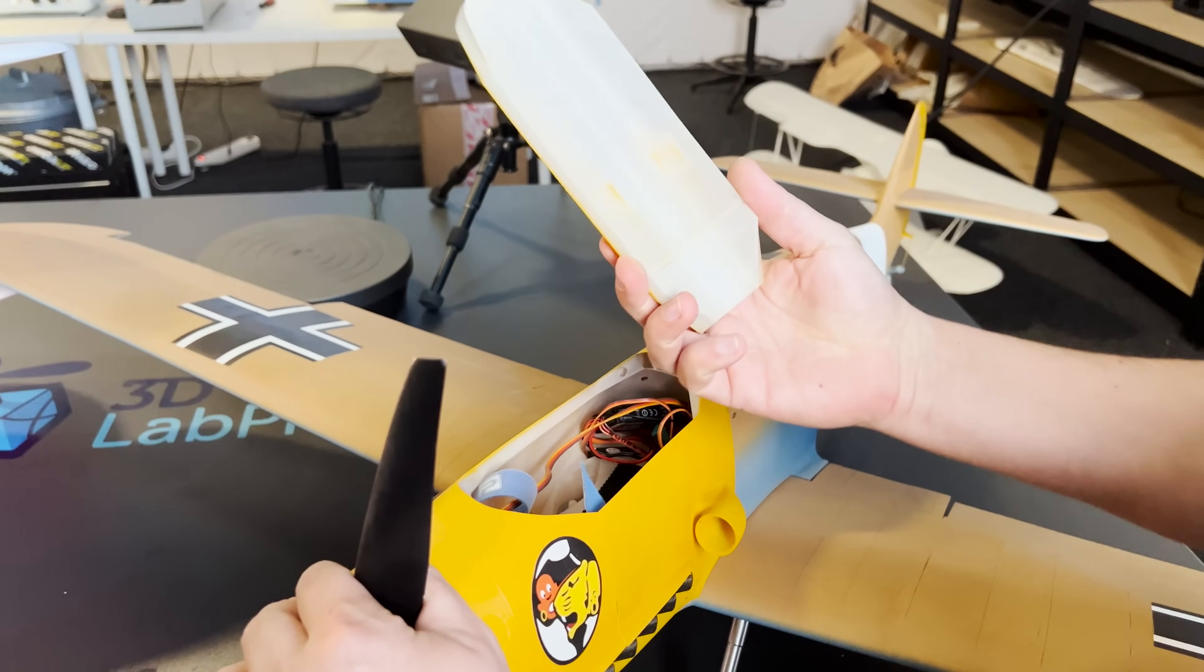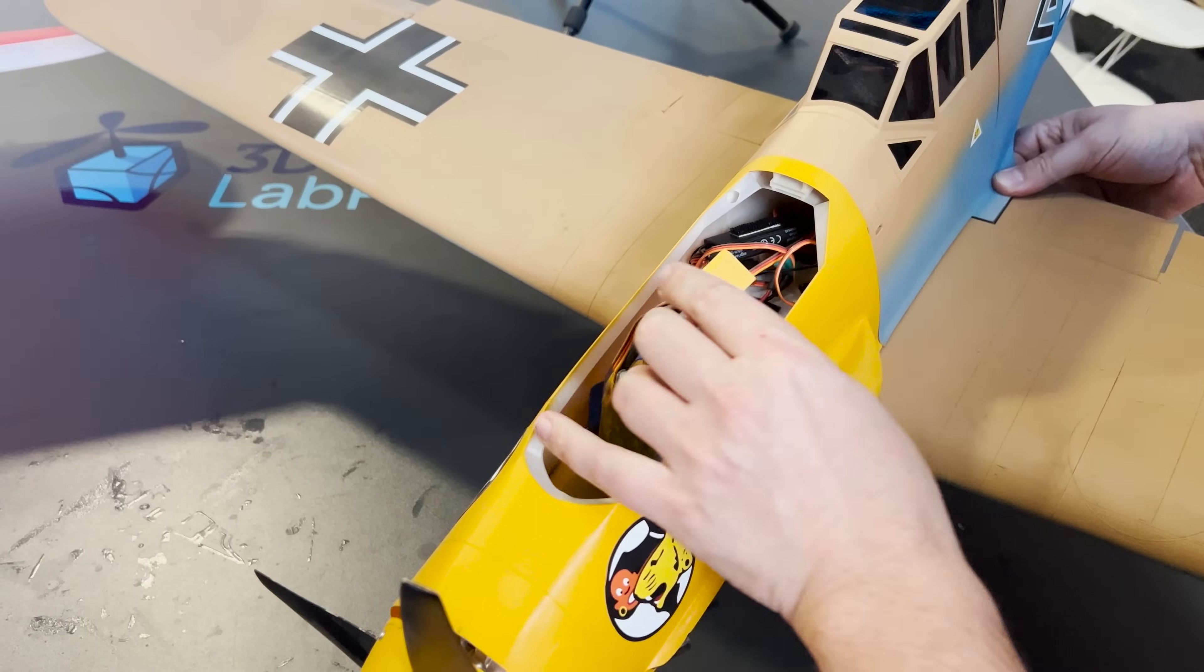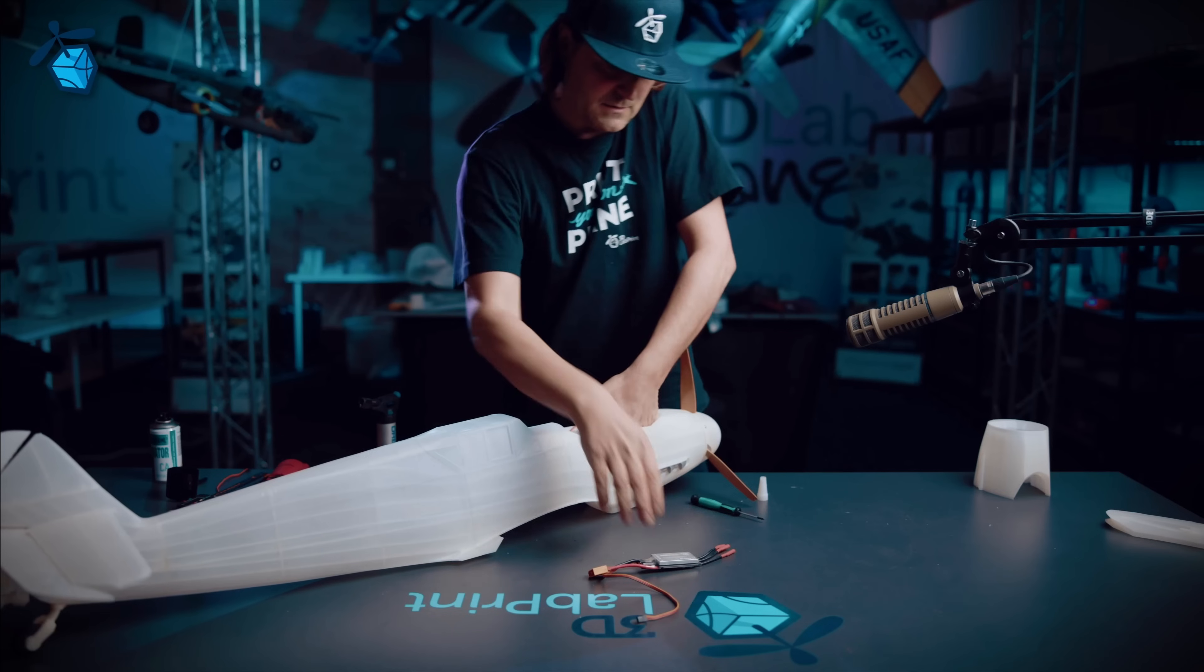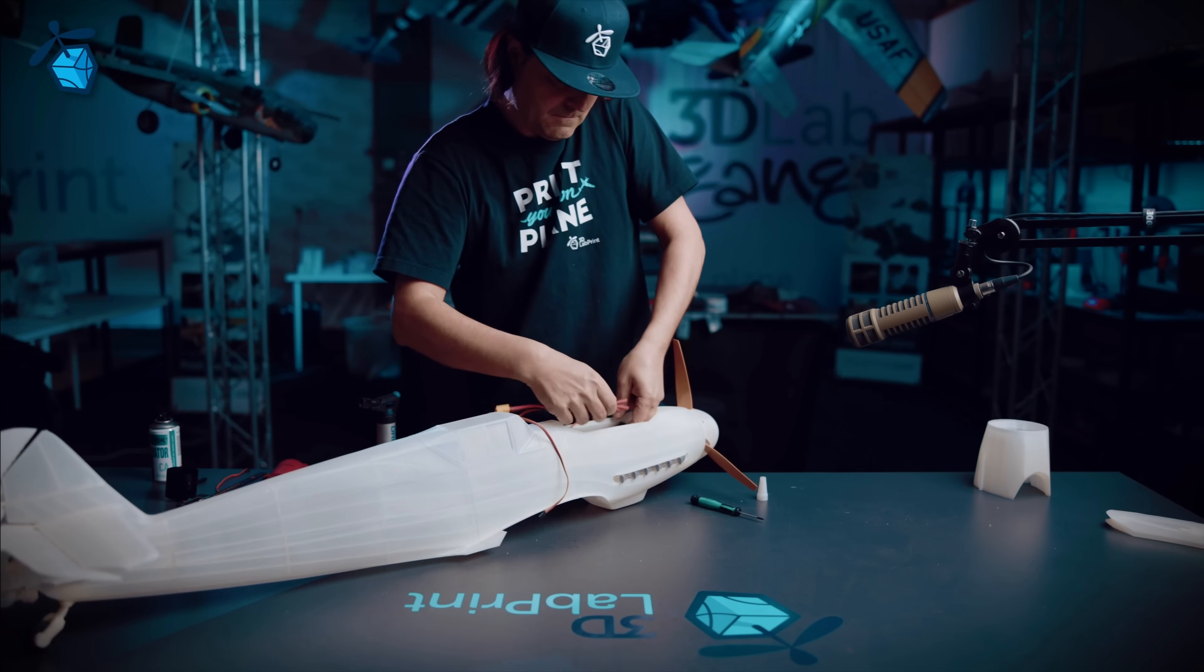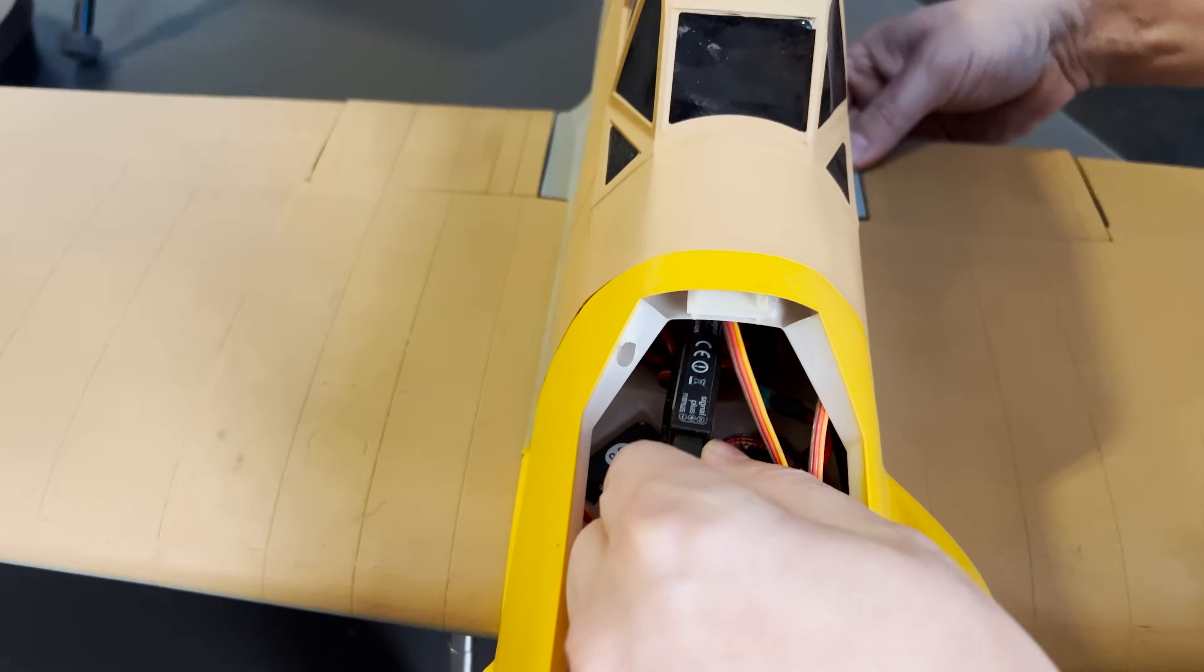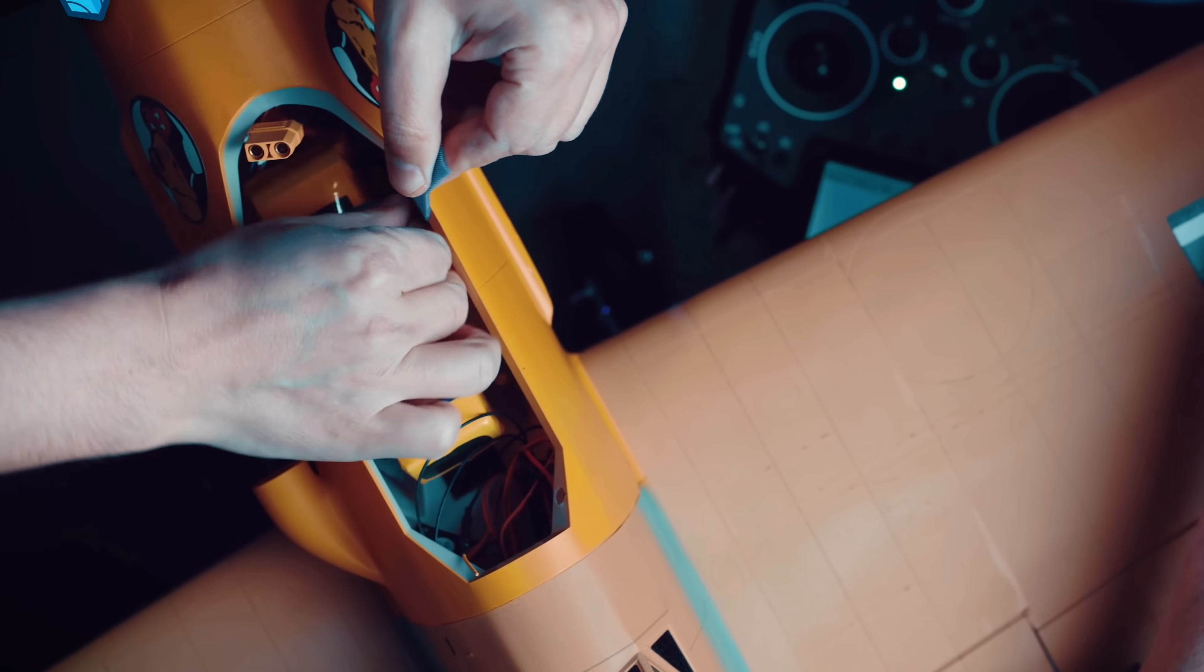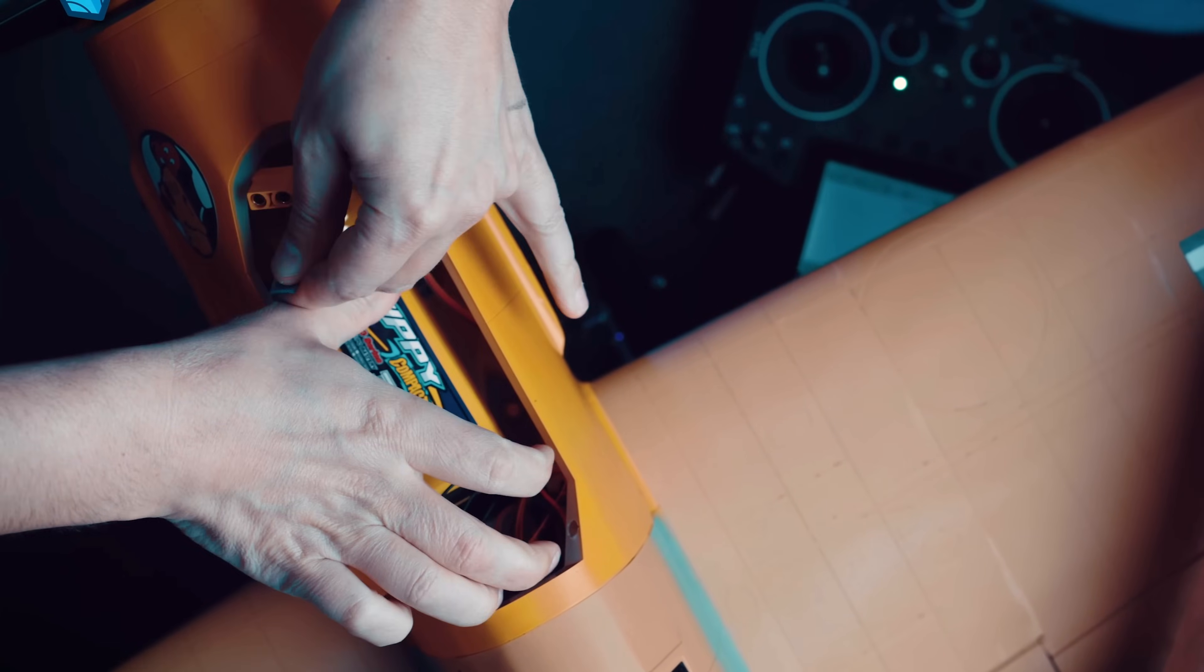So let me show you the electronics. Everything is under this cover. To make an RC model fly we need an electronic speed controller or ESC for short, which controls the speed of the motor. Then there is the receiver and here's the space for the battery, which is usually held in place by a velcro strip.